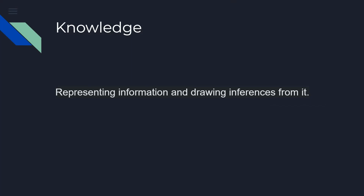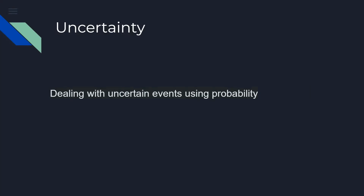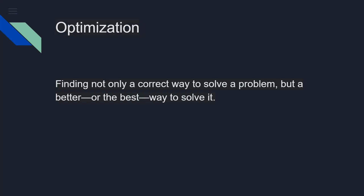When you use ChatGPT, you type something and it gives you a very intelligent, correct, straight-to-the-point response. How is it able to understand and represent knowledge? We'll see how that is possible. We're also going to cover uncertainty. There are many probabilistic events in computing — even ChatGPT works with uncertainty, but there are calculations involved to reduce it. There are certain facts that even a computer isn't really sure about, but some things are done to deal with those uncertainties.